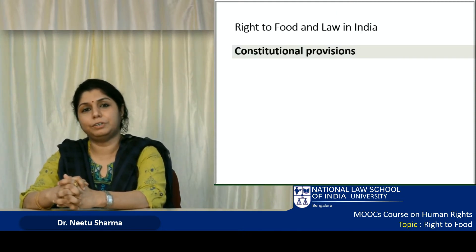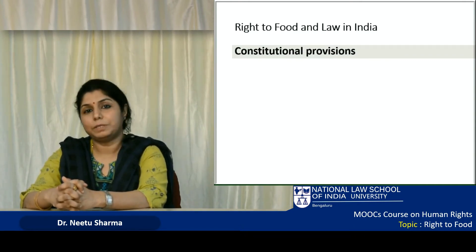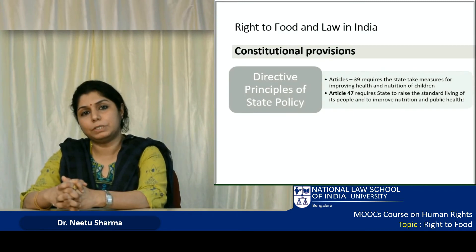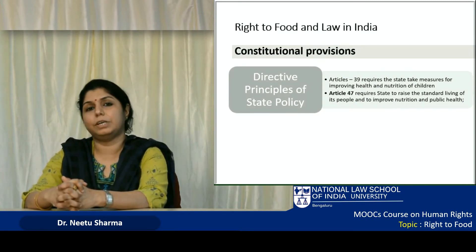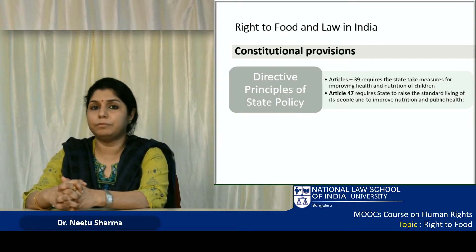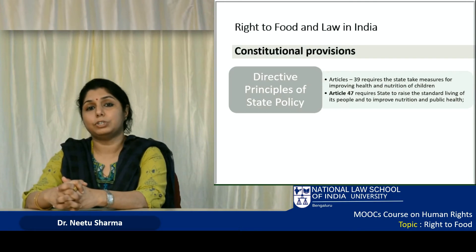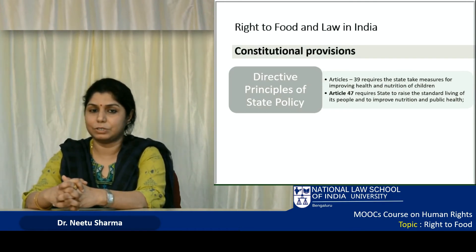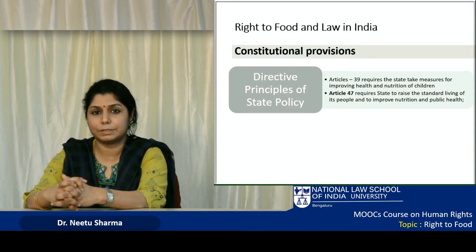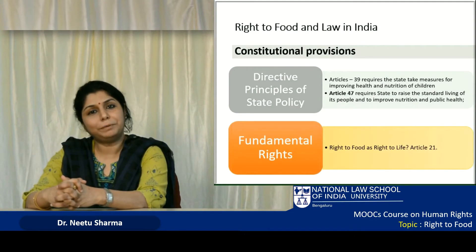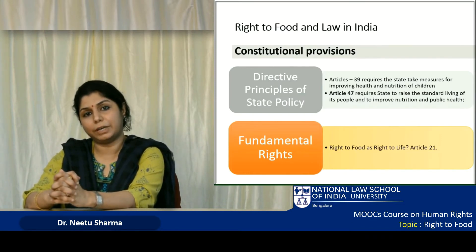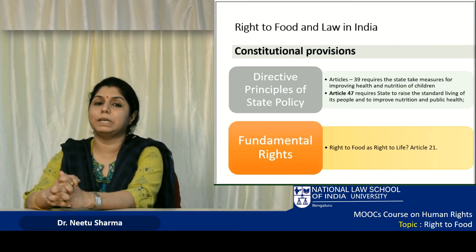Let us look at how the Constitution of India responds to the need of ensuring right to food for all. In the Directive Principles of State Policy, Article 39 requires the state to take measures to ensure right to food, health, and nutrition for all children. Article 47 again emphasizes the need to take special measures for ensuring a better standard of living for all citizens. So food security, nutrition, and right to food seem to be part of these two provisions if we interpret them progressively. Article 21 mentions right to life but has not been conclusively interpreted as including right to food — when the matter was taken to the Supreme Court, this contention was never fully resolved.